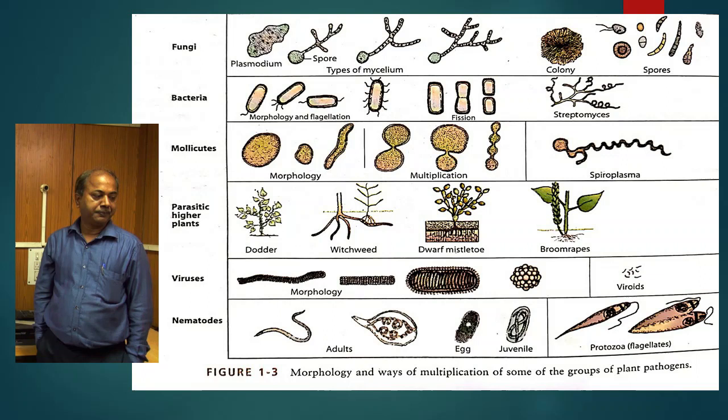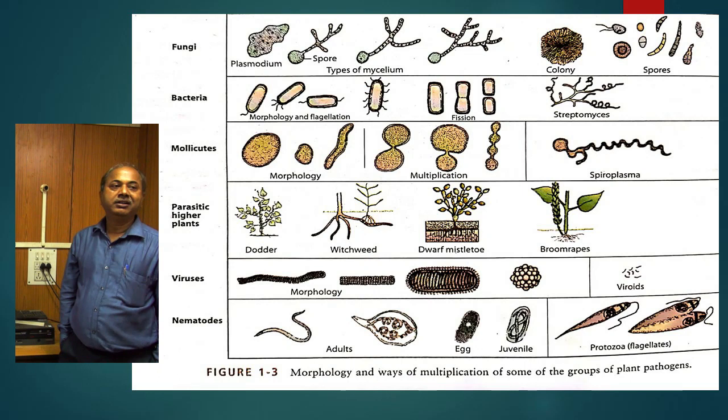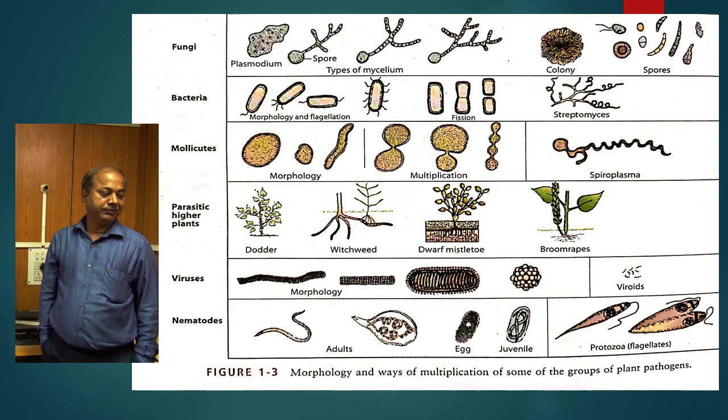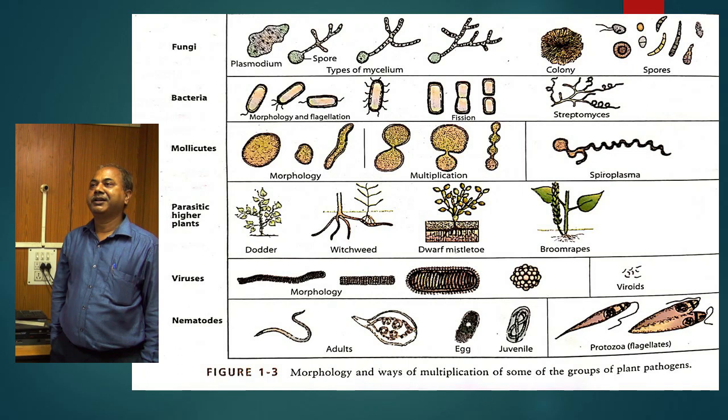In fungi, there are lower fungi which under broad classification come under protozoa, and then true fungi that come under Oomycetes, which we will discuss later on. In bacteria, there are six genera which are phytopathogenic and cause disease to plants.